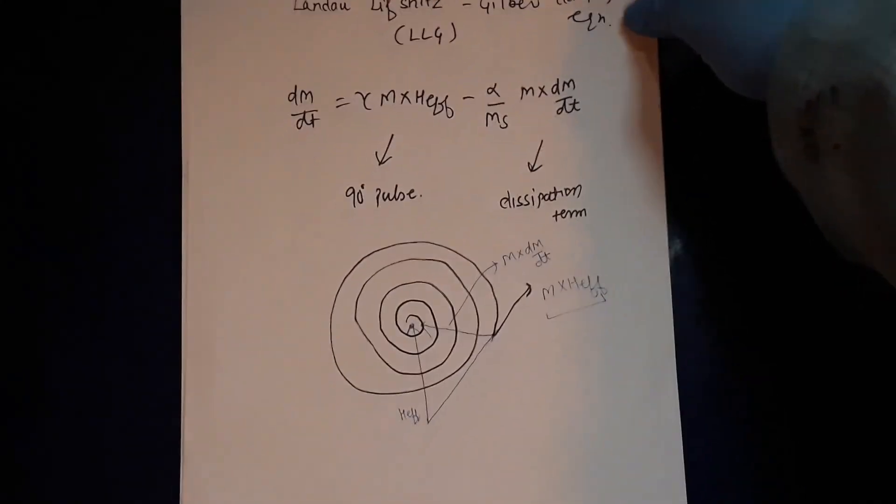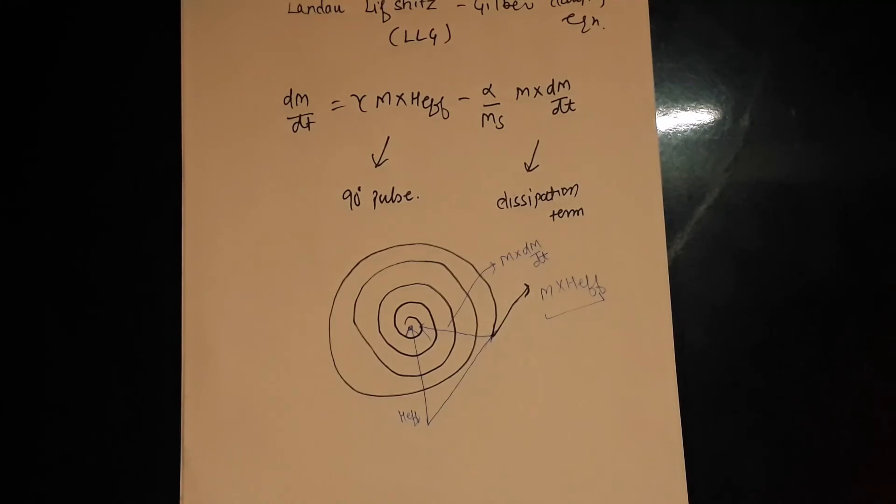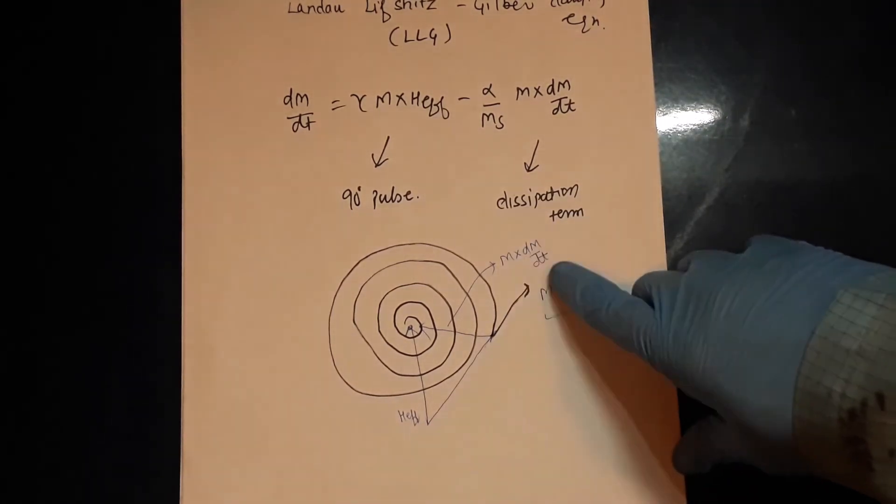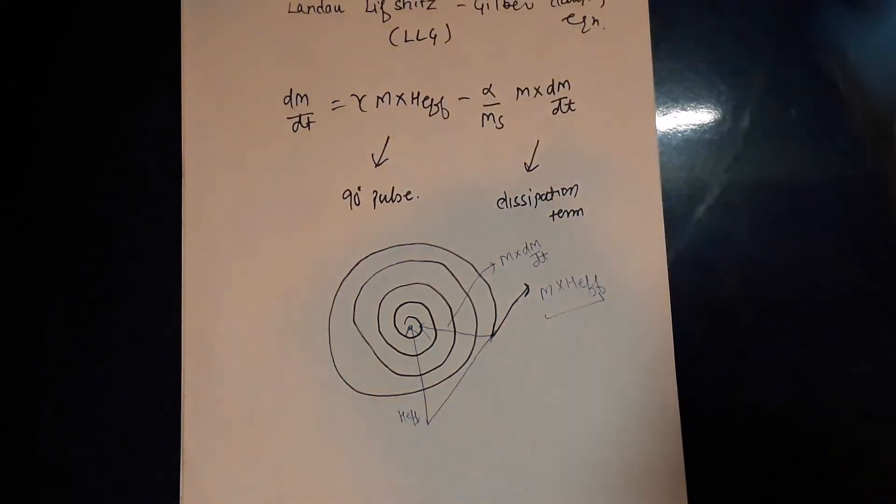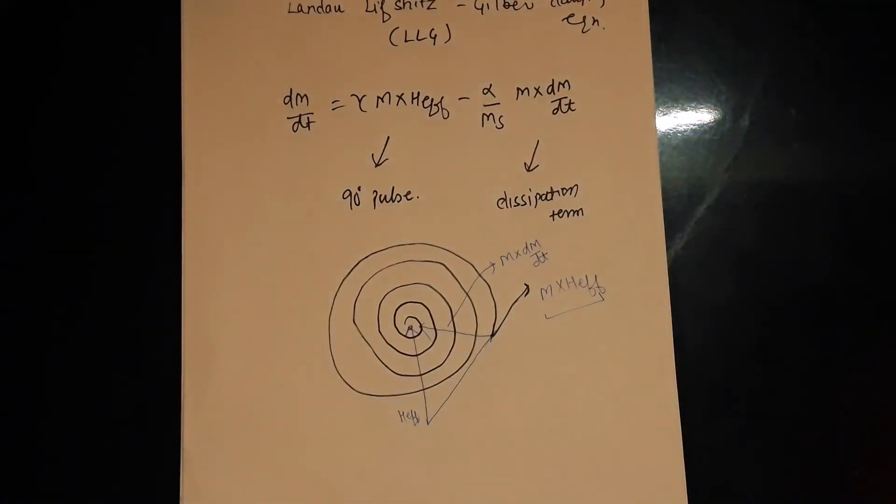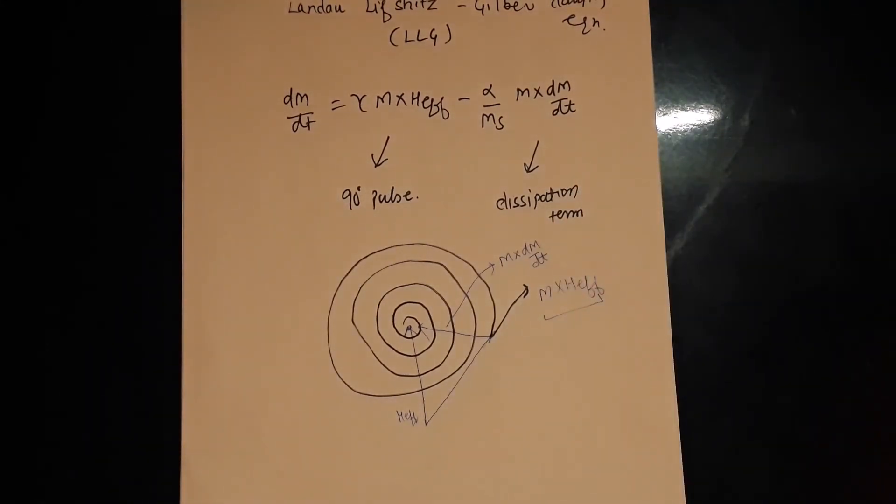This is your effective magnetic field. The magnetization should precess to the effective magnetic field. The term which comes into the picture is M cross H effective. It should always keep spinning, but what happens is it tries to bring towards the H effective. The term which is M cross dM by dt is called the dissipation factor. This is the most important equation in ferromagnetic resonance.